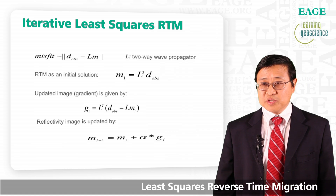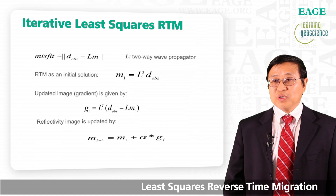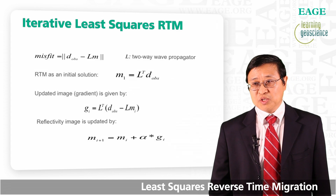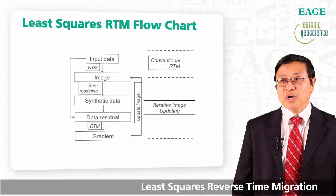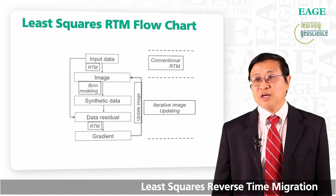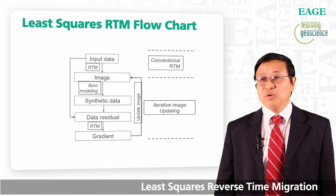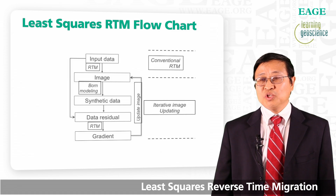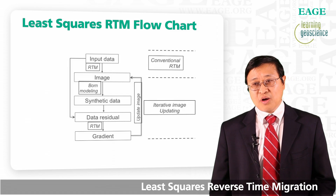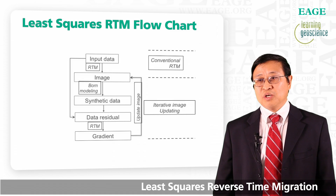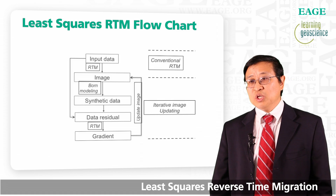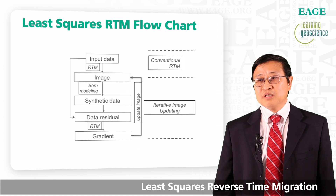As long as there is signal in the data residual, you can calculate the gradient, which is the RTM operation on this data residual. Then you add details to your final image. Here is the flowchart for least squares RTM. First, you have input data as shot records and perform RTM to get the conventional RTM image. Least squares RTM continues with iterative image updating: you use the migration image as the reflectivity model, perform forward modeling to get synthetic data, then combined with input data you get the data residual. As long as there is remaining signal in the data residual, you can update the image by doing RTM on the data residual to get the gradient — additional residual image added to your final image. Because of this additional loop, you add more details to your final image.